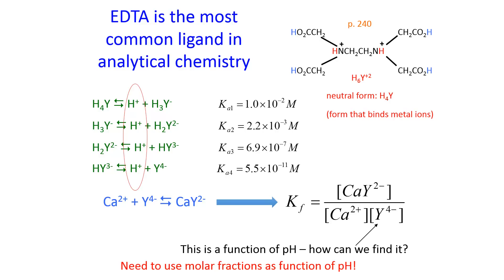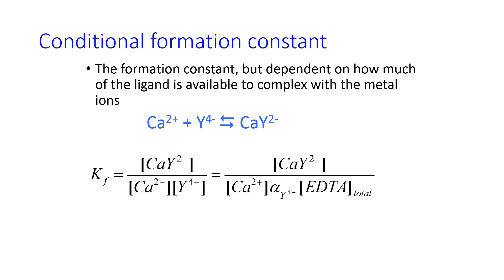The way we express this with the formation constant is by using a thing called the conditional formation constant, which modifies KF, the original KF, to account for the fact that not all of the EDTA may be in the correct form to complex with the metal ions. So the change here is the addition of this alpha-Y4- term. And alpha-Y4- is the fraction of the ligand that's in the correct form. So alpha-Y4- times total concentration equals concentration in the Y4- form.